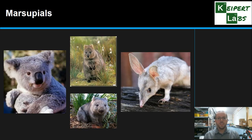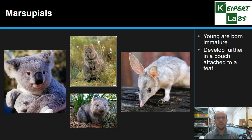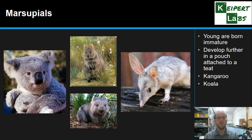Particularly relevant in an Australian context, we also have mammals called marsupials. The young are born live but they're quite immature — they still have a lot of growing and developing to do before they can survive on their own. They're born very immature and then develop further in an external pouch, or marsupium, attached to a teat or nipple, where they're fed and kept until they're old enough to survive independently. Kangaroo, koala, possum, quokka, and bilby are all marsupial mammals.